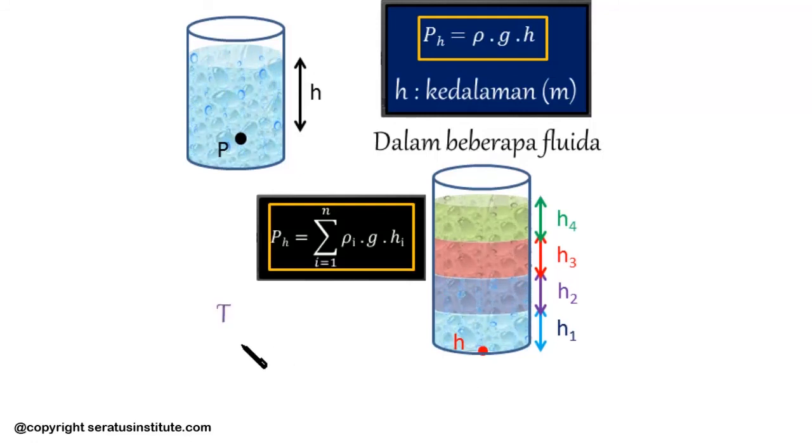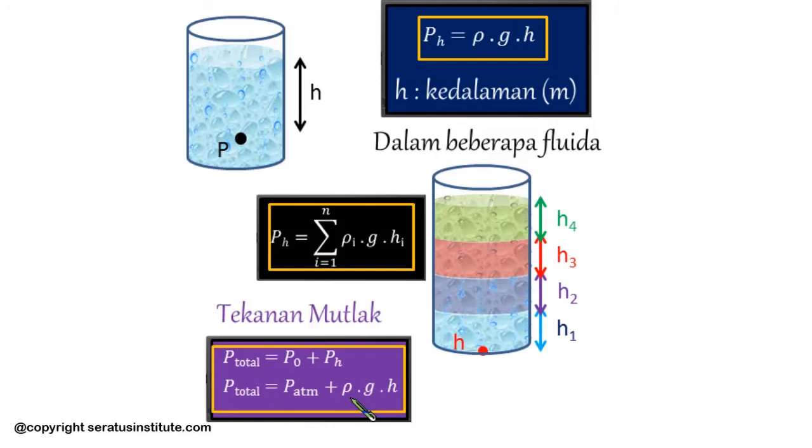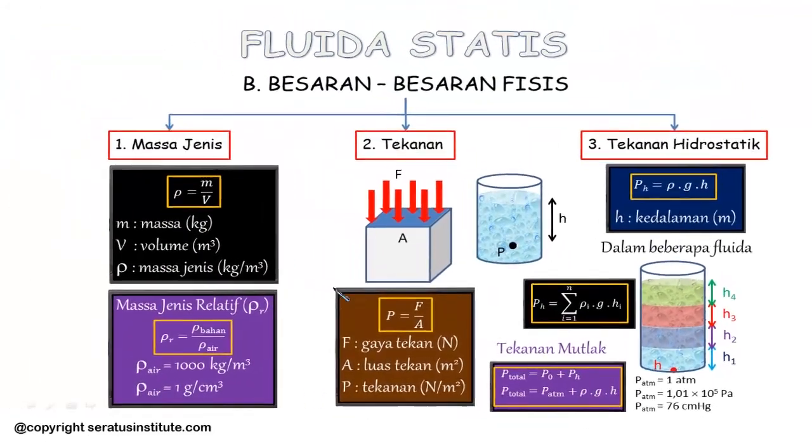The last is absolute pressure or total pressure. Absolute pressure or total pressure equals atmospheric pressure plus hydrostatic pressure. Symbolized as P0 or ATM for atmospheric pressure, then hydrostatic pressure with formula rho G H. This is the formula for total pressure. To remember, the value of atmospheric pressure equals 1 ATM, in international units this equals 1.01 times 10 to the 5 pascal, or in other units is 76 cm Hg. This is atmospheric pressure.